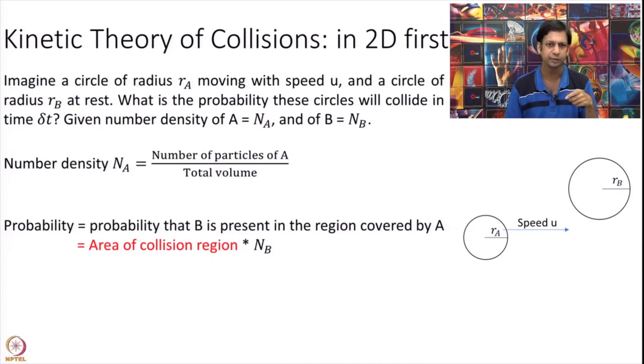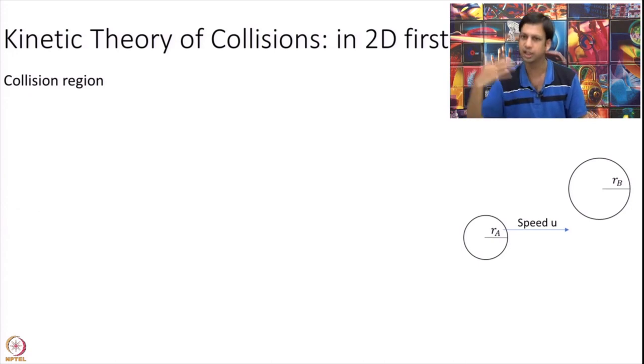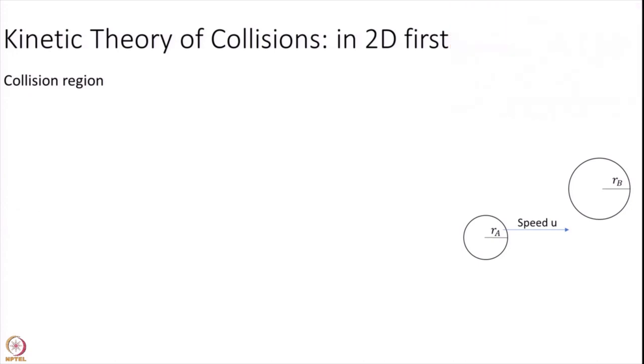How do I calculate this probability now? This probability is calculated, well this probability is equal to the probability that B is present in the region that A covers while it moves. So I have small time delta t, in this small delta t A will move a little bit forward. So I have this A, it will move a little bit forward and so it is covering some region and if B happens to be in that region, well your collision will happen between these two circles, these two circles will coincide. So I simplify my problem a little bit further. I say, well then I find the area that this A is going to cover multiplying by the density of B, that will give me the overall probability.